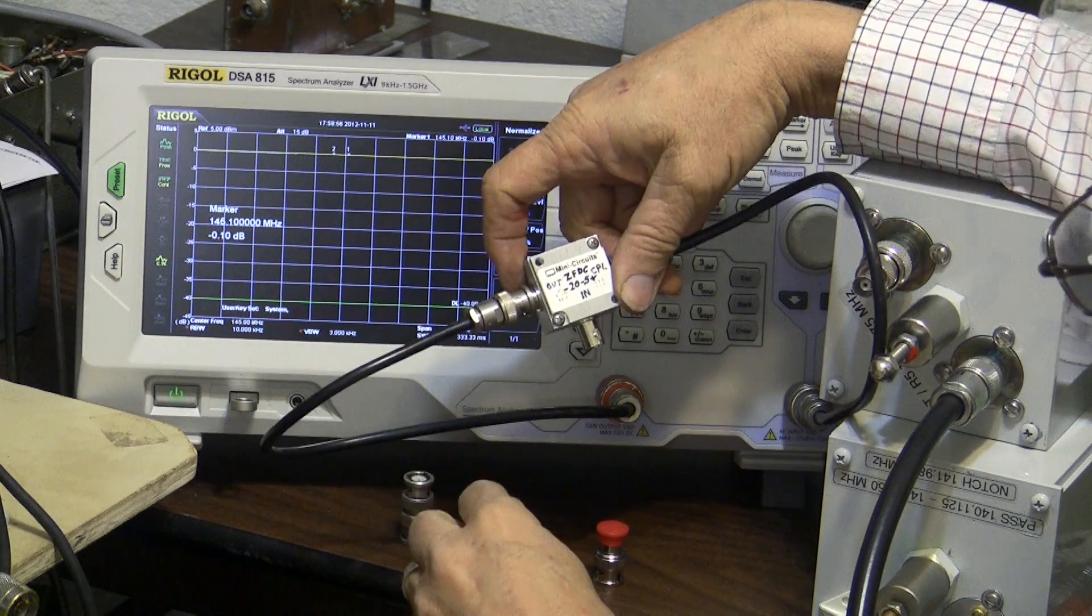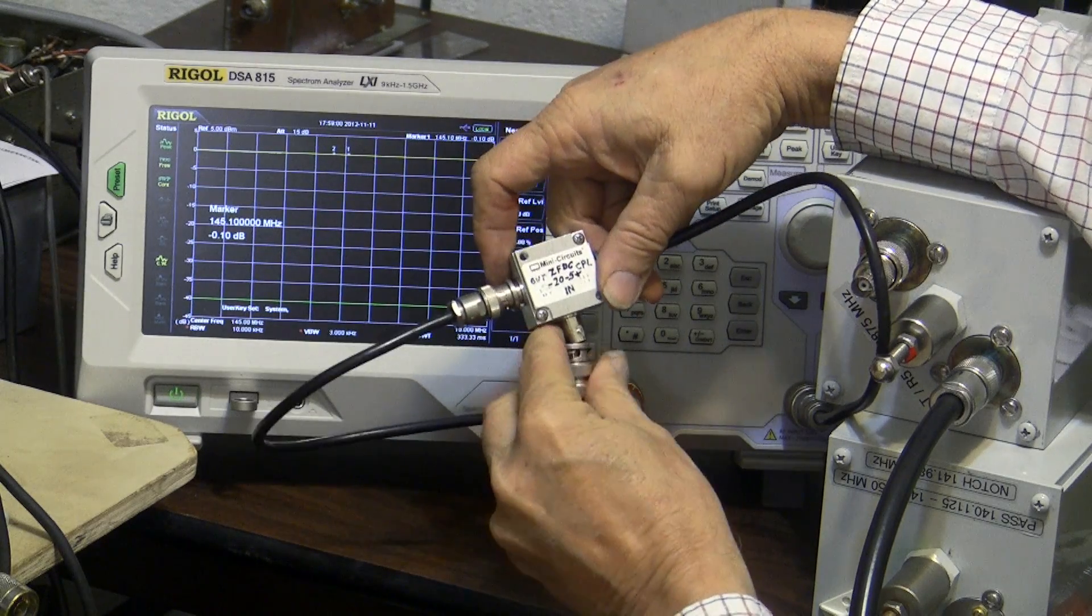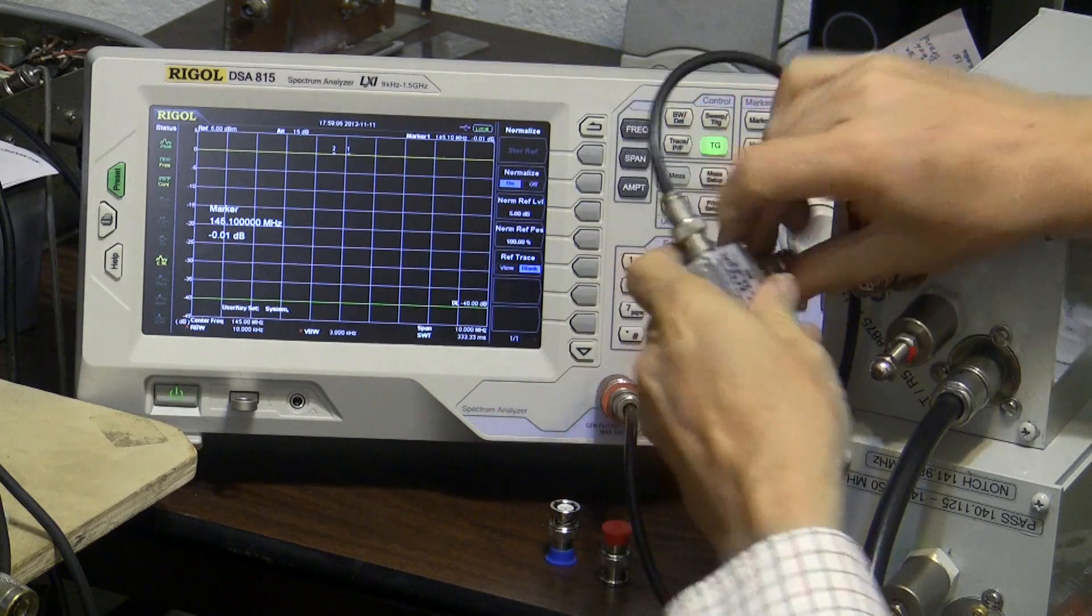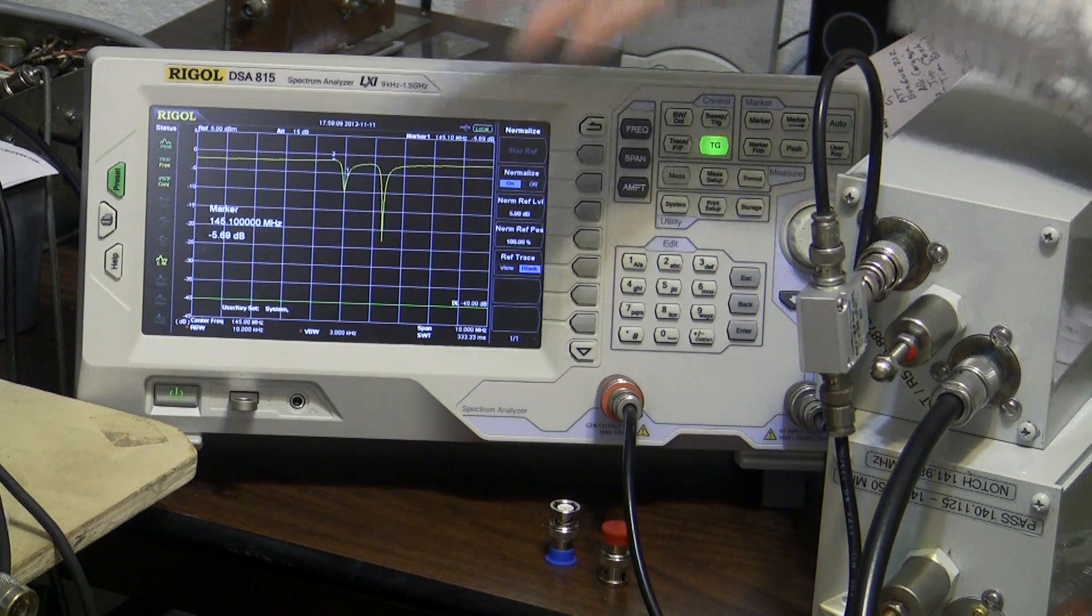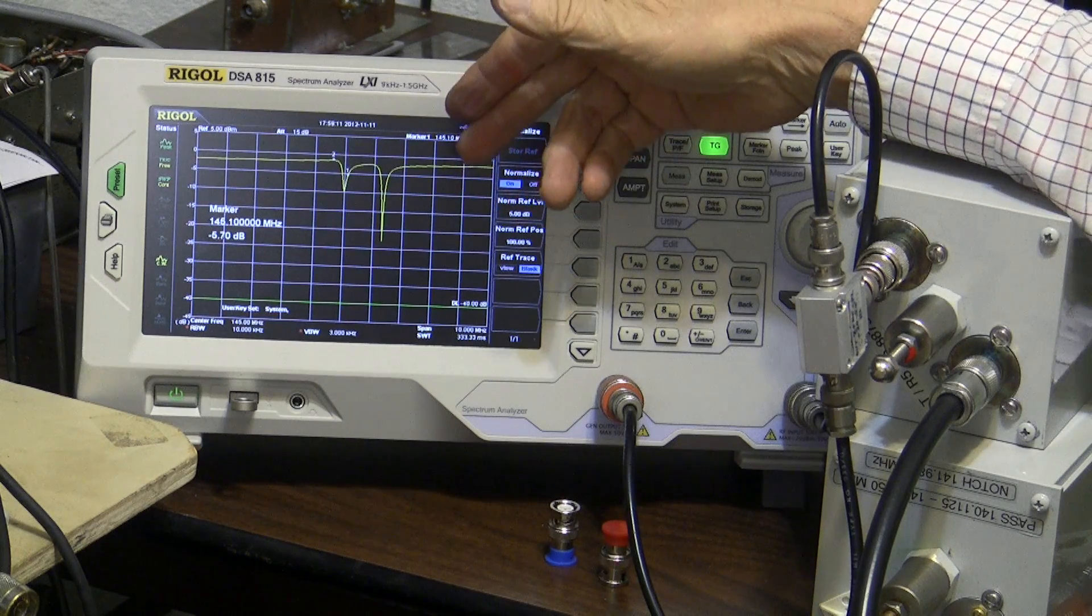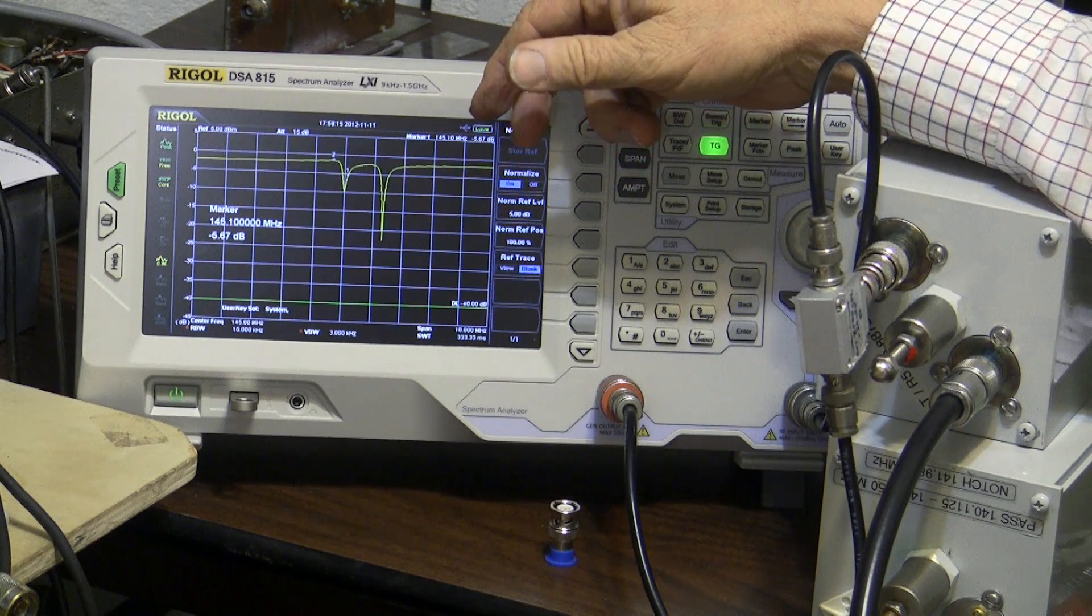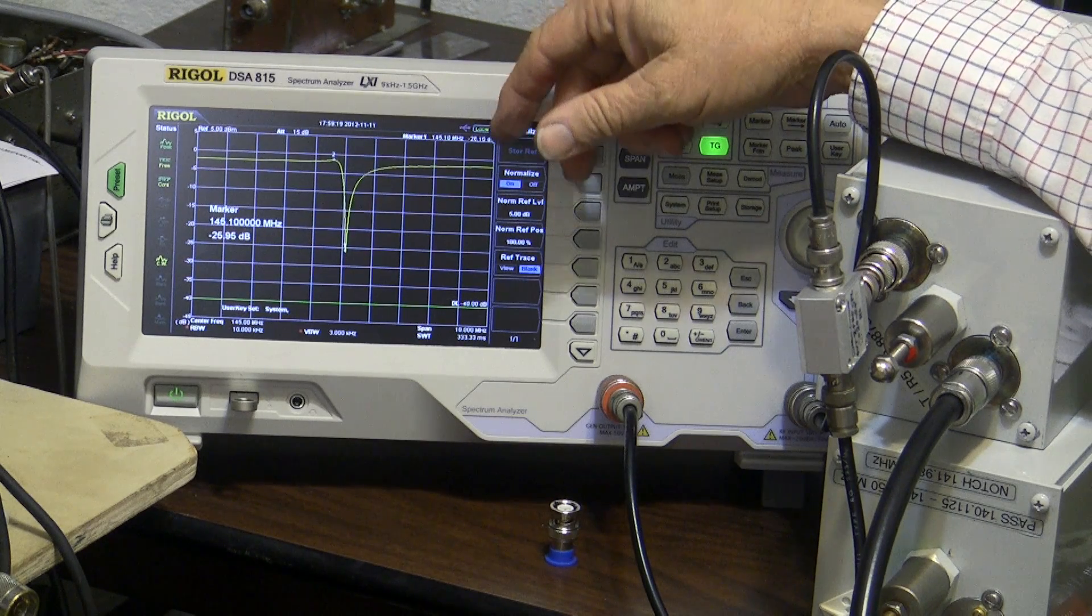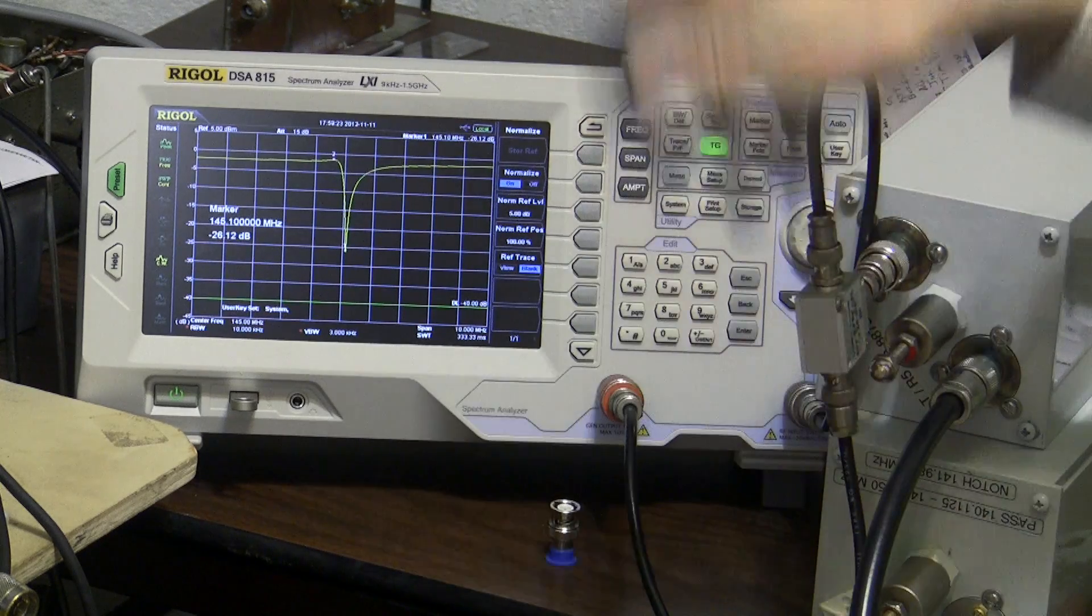All right, so now we can put this back on, and we'll put it on this unit here and see what our return loss is. Well, that doesn't look very good, but that's because we don't have a load on the port. So I just put the load on the port here, and now I have a 50 ohm load for this entire package.